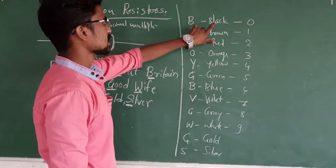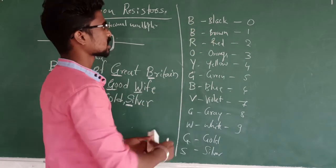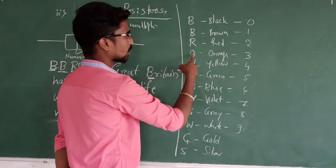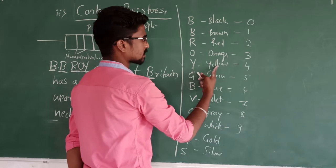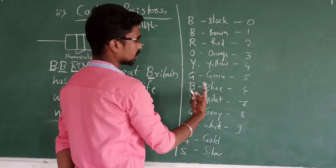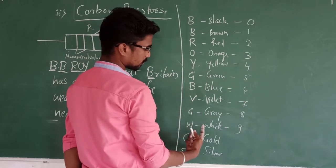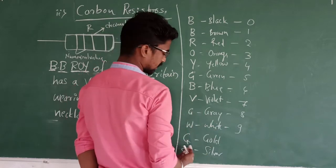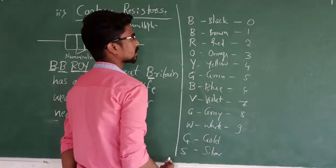B represents Black color, B represents Brown, R indicates Red, O indicates Orange, Y represents Yellow, G represents Green, B represents Blue, V represents Violet, G represents Gray, W indicates White. Then G represents Gold and S represents Silver.